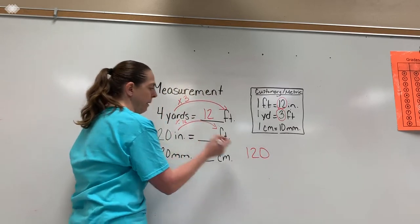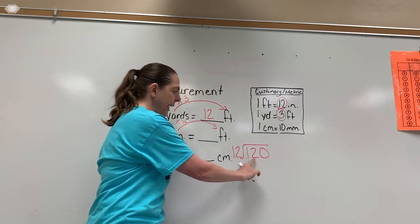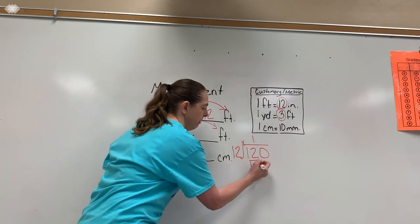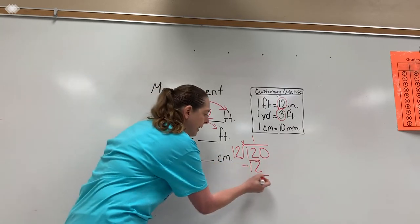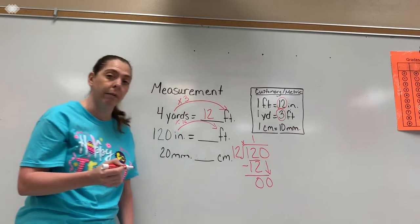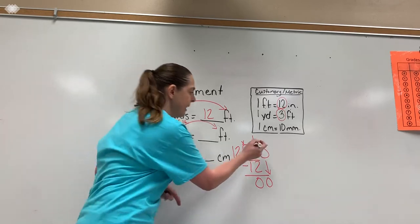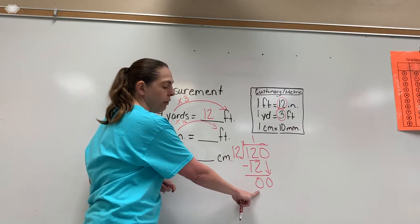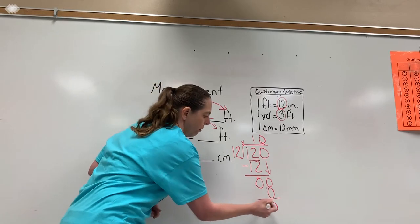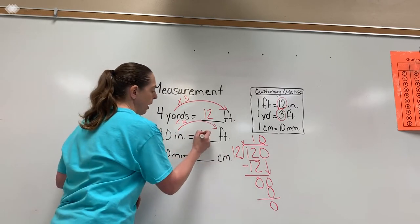120 divided by 12. So I cannot divide 12 into one, but I can divide 12 into 12 and it goes in one time. 12 times one is 12. I subtract that and I get a zero, but I'm not finished because I still have this zero sitting here. So I'm going to have to bring that down. Even though this is zero and you're thinking, okay, I'm done because I don't have any kind of a remainder, I still have to have an answer above this zero. So how many times can 12 go into zero? It goes in zero times. When I finished that, now I'm finished because I don't have anything else to bring down. So 120 divided by 12 is equal to 10.